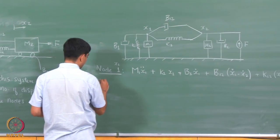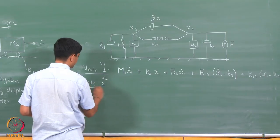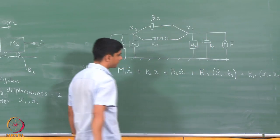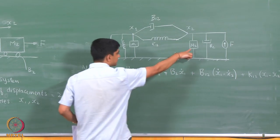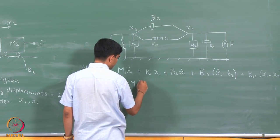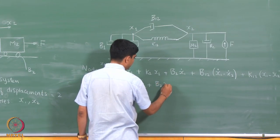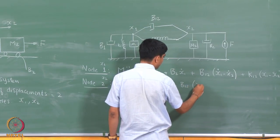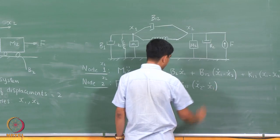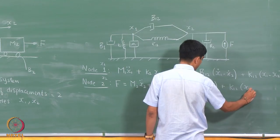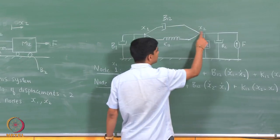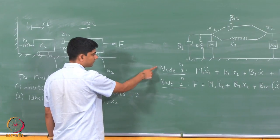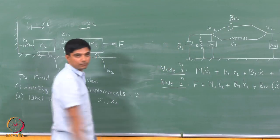Looking at the second node x2: we have an input force, the force from the mass, and the two connecting elements. This gives f equals m2 x2 double dot plus b2 x2 dot plus b12 (x2 dot minus x1 dot) plus k12 (x2 minus x1). The sum of all forces equals the external force f. These equations govern the dynamics of the system.